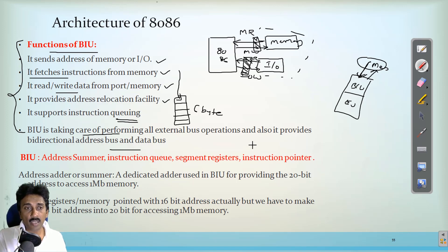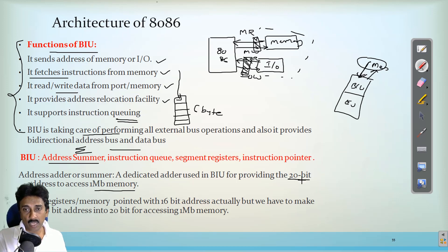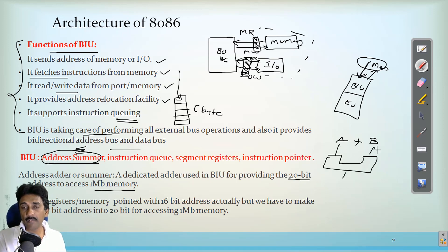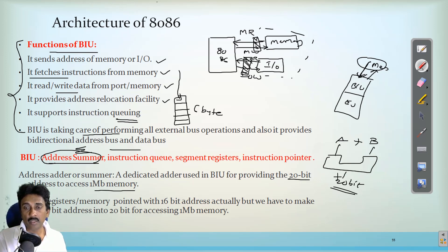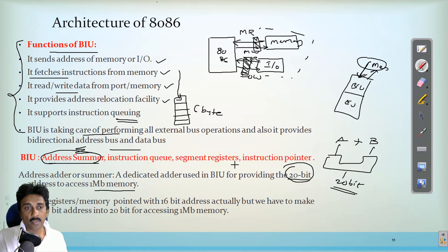Now let us look at the sub-parts of the bus interface unit. One is the address summer, denoted by sigma, which is a dedicated adder. This dedicated adder is used for accessing the 1MB memory. To access this 1MB memory we need to provide a 20-bit address. So to generate this 20-bit address we use the address summer or dedicated adder — one adder is provided in the bus interface unit that generates a 20-bit address, giving the facility to access the full 1MB memory.